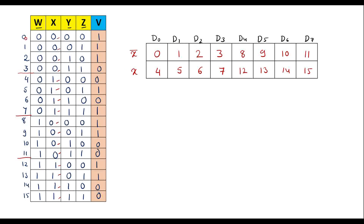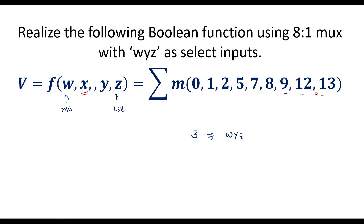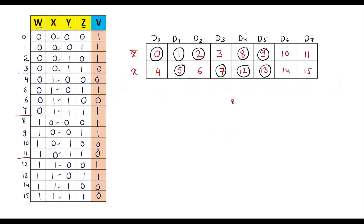After writing this, for cell number 0 the output is 1, so we put a circle. For cell number 1 output is 1, put a circle. For cell number 2 output is 1, put a circle. Wherever 1 is present we put a circle — so for cell numbers 5, 7, 8, 9, 12, and 13. The remaining cell numbers are zeros.